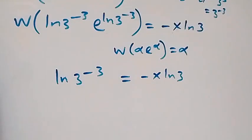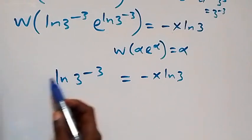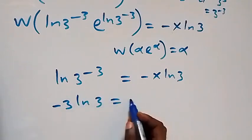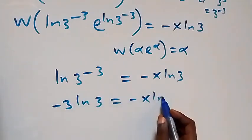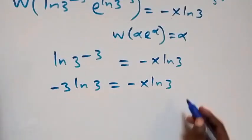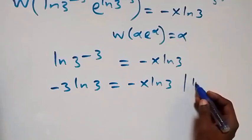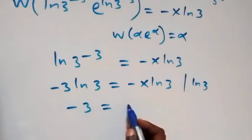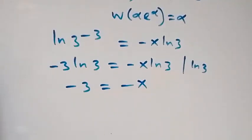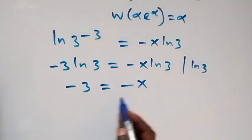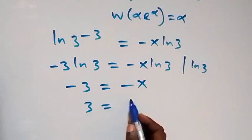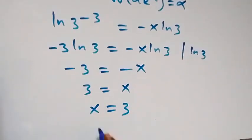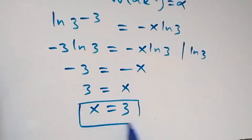From the law of logarithms, minus 3 can come out, giving minus 3 ln 3 equals minus x ln 3. Dividing both sides by ln 3, the ln 3 terms cancel, leaving minus 3 equals minus x. Multiplying through by minus 1, we get 3 equals x, which means x equals 3. Therefore the solution to this problem is x equals 3.